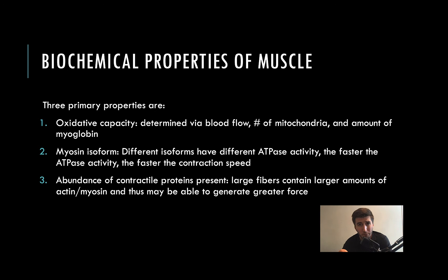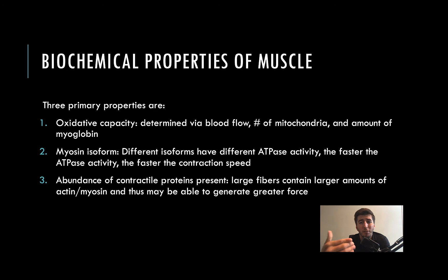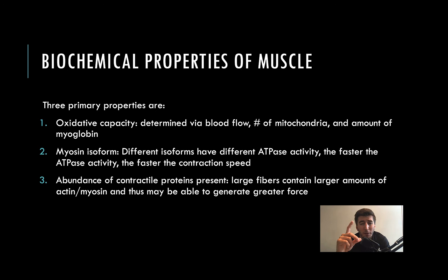The myosin isoform — the specific type of that thick contractile protein — matters because myosin heads have different speeds of ATPase activity. If you can rapidly cleave ATP, you get a faster contraction — re-cock and pull faster and faster. Think of it like a bolt gun versus a semi-automatic: in a bolt gun you recycle the bolt every time, whereas semi-automatic you just pull the trigger. The faster the ATPase activity, the faster the contraction; slower ATPase means a slow, determined, dedicated process.